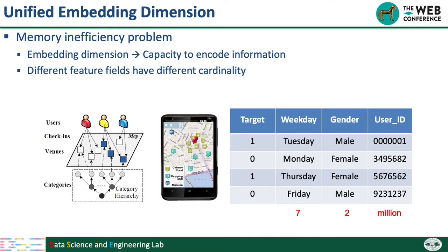Another reason is that different feature fields have different numbers of unique values. For example, the gender feature has only two values — male and female — but the user ID feature contains millions of unique values. We should assign a larger embedding dimension to fields with more values, so we can encode more information and capture their relationships with other features. According to these two reasons, we should assign different dimensions to different feature fields.